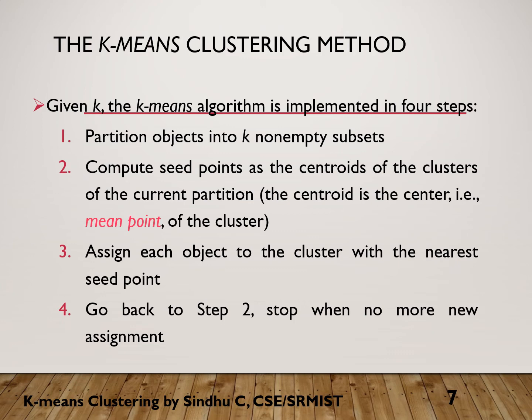The k-means clustering method takes K, the number of clusters, as input. Given K, we implement it in four stages. First, partition the objects into K non-empty sets by randomly assigning objects to clusters. Then, compute the seed points as the centroid of the clusters of the current partition — the centroid is the center, which is the mean, giving the name k-means clustering.